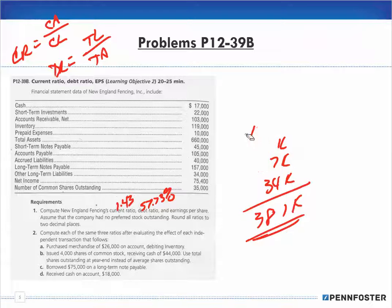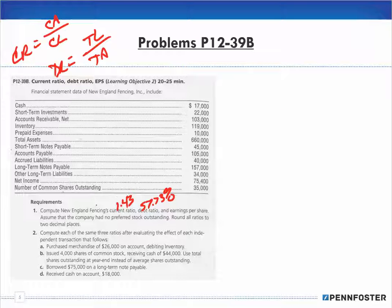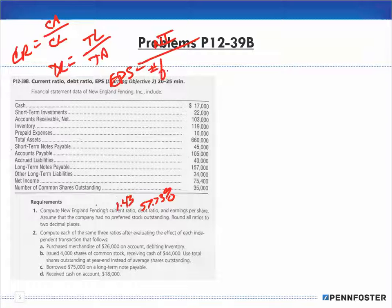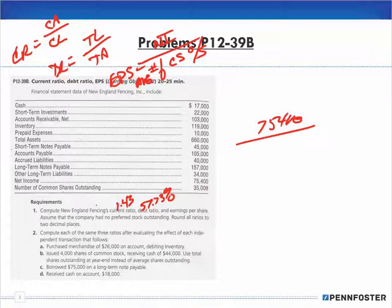Last is earnings per share, which equals net income divided by the average number of common stock shares outstanding. Our net income is 75,400 and the number of shares is 35,000. That gives us earnings per share of 2.15.